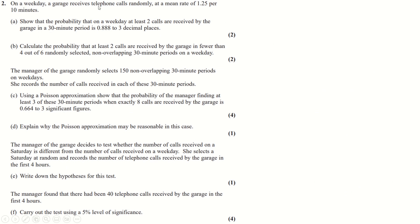Question two: calls are received randomly at a given rate, so this is a Poisson question — it concerns the number of events per unit time. A 30-minute period is three times longer, so we multiply the rate by 3 to get lambda = 3.75 for our Poisson distribution.